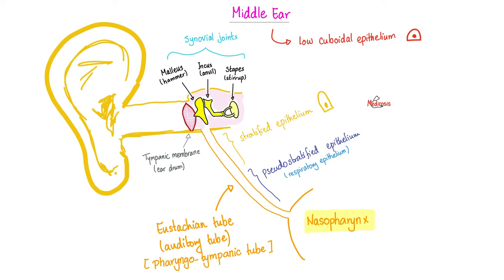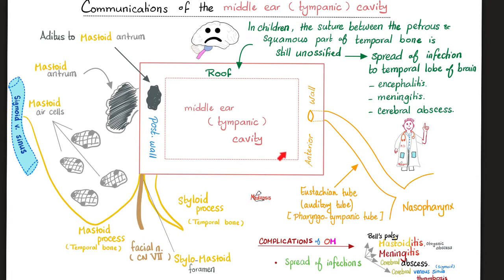Your nasopharynx is lined by epithelium. Auditory tube — epithelium. Middle ear is also lined by epithelium. Your sinuses, your mastoid air cells are all lined by epithelium that can get inflamed and infected. Here is your lovely middle ear cavity or tympanic cavity. In young children, the suture between the petrous part of the temporal bone and the squamous part of the temporal bone is still unossified, which means if they get otitis media, it can spread upwards to the brain, causing encephalitis, meningitis, brain abscess. The tympanic cavity itself is part of the temporal bone.